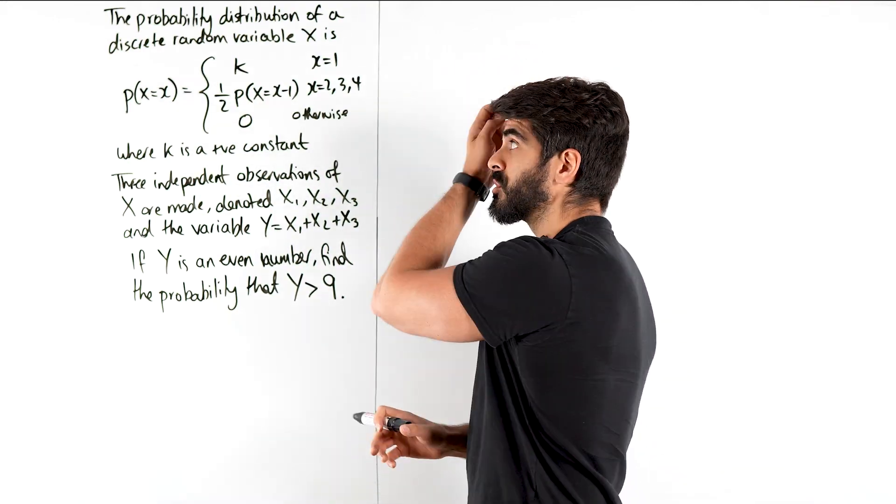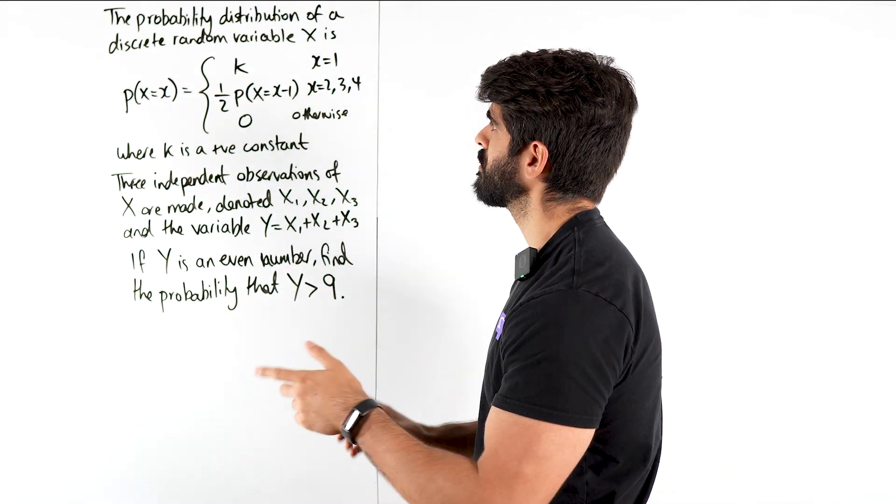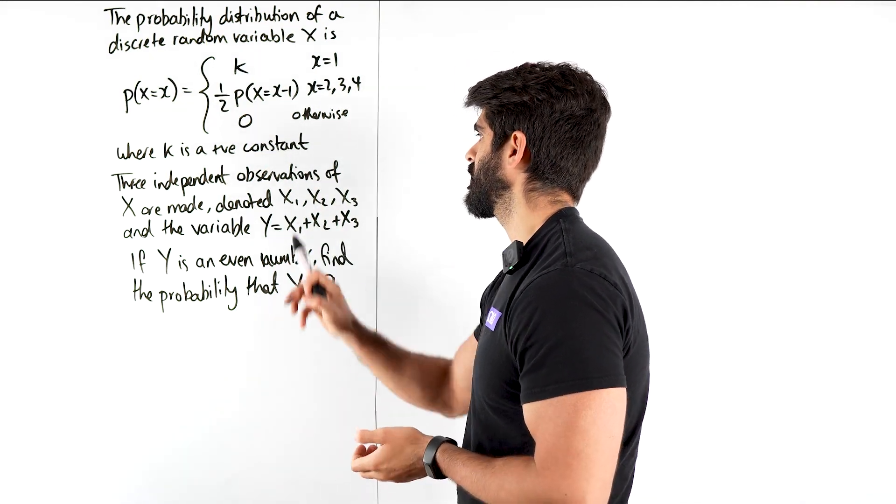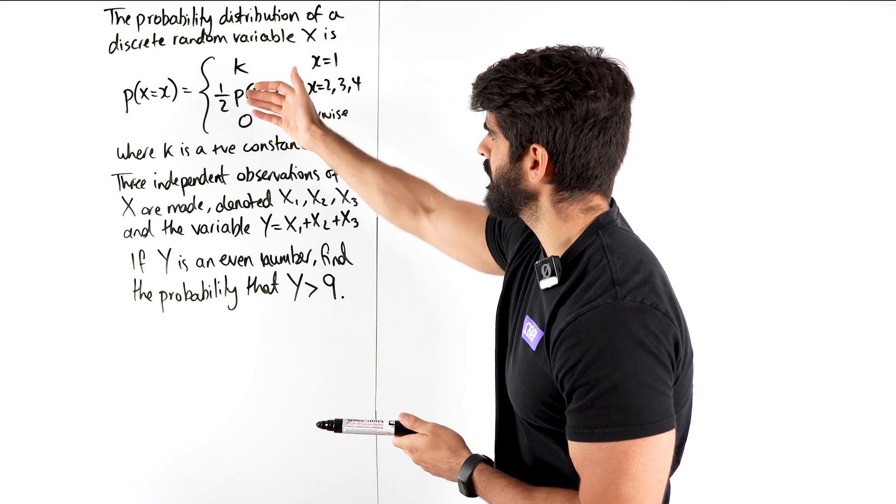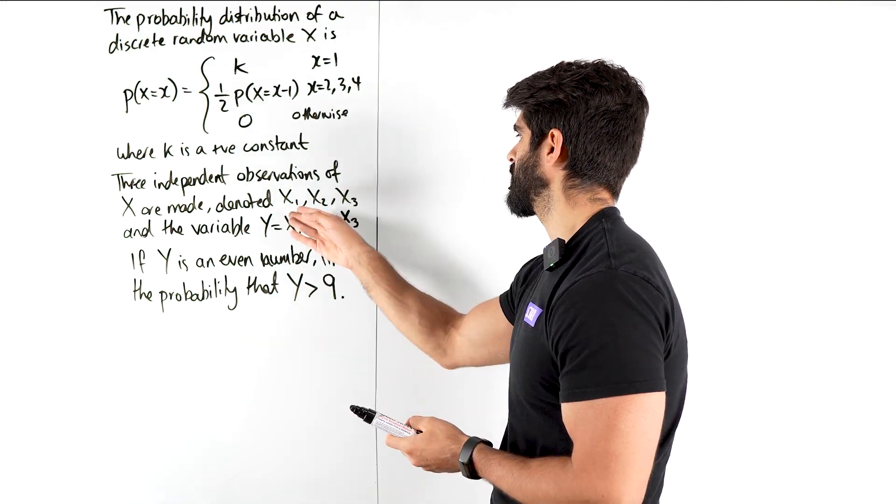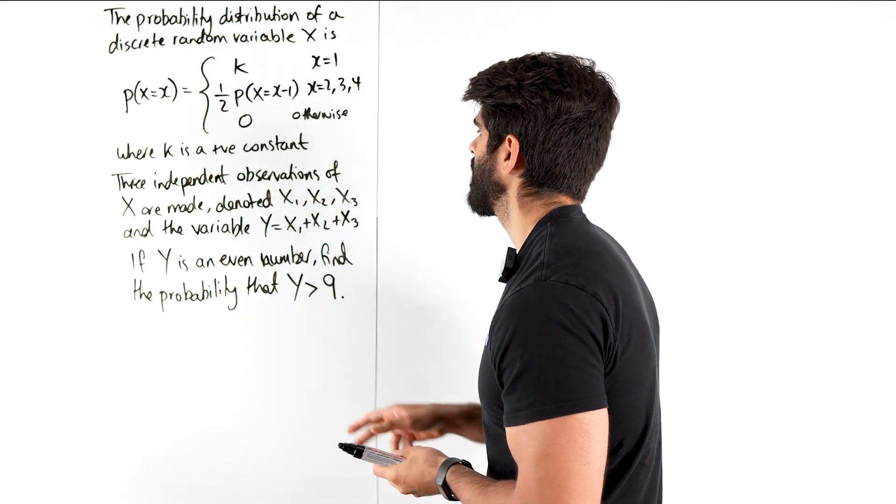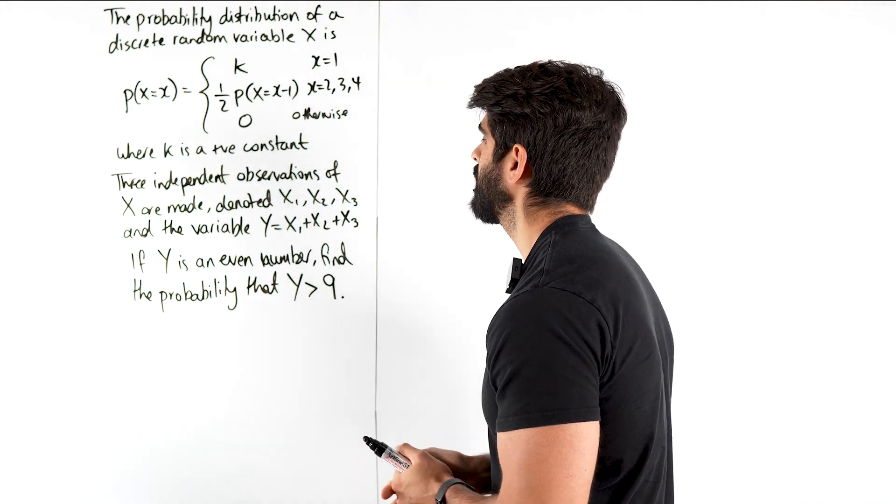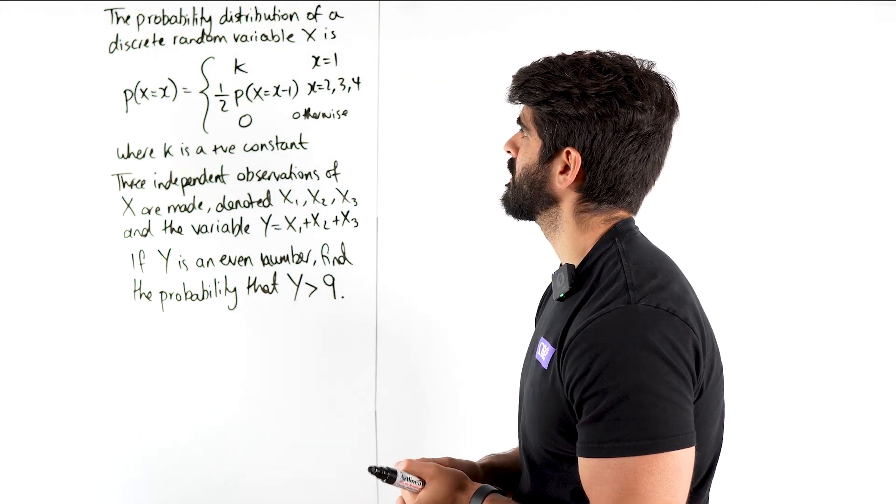The probability distribution of a discrete random variable x is given by this, where k is a positive constant. It's saying three independent observations of x are made, denoted as x1, x2, x3, and the variable y is the sum of those observations. If y is an even number, find the probability that y is bigger than 9.